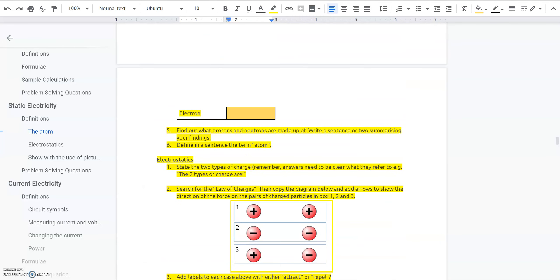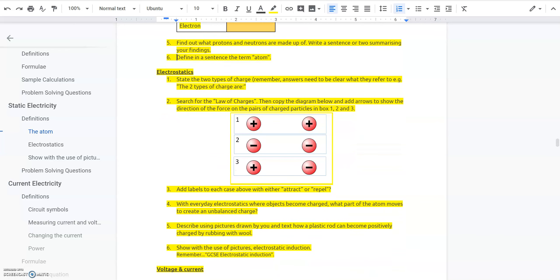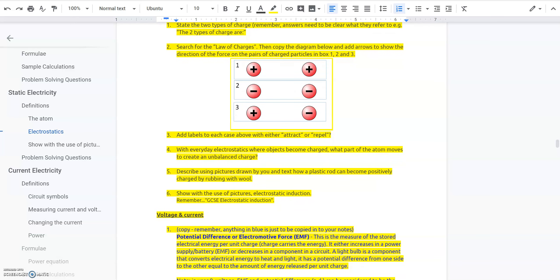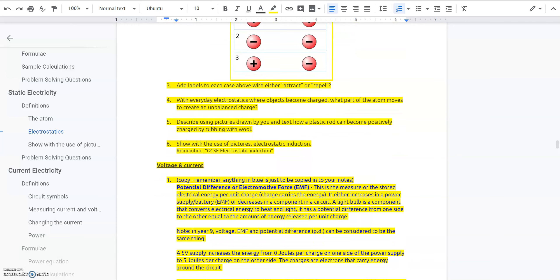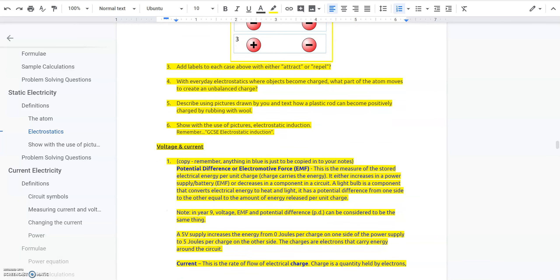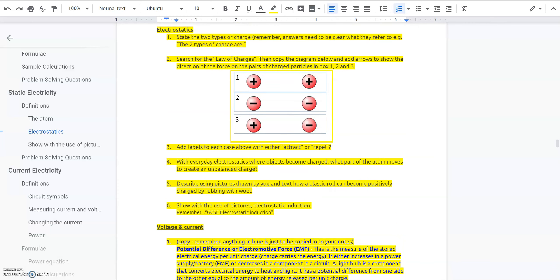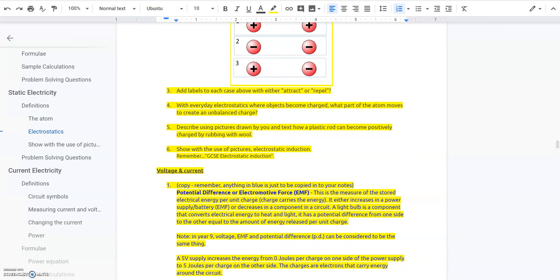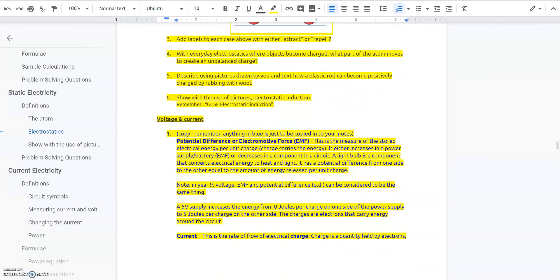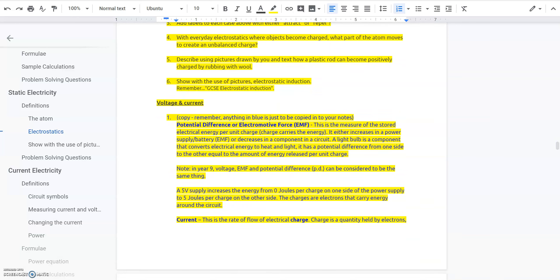So we've already answered all of these and finding a fact, write a sentence or two summarizing your findings. Part one of electrostatics asks you to name the two types of charges which we mentioned and there's a clue in question two to those. And you can look up the law of charges that just tells you what attracts and what repels and we have looked at that in class. It then asks you to add a label to those which I'll leave you to do. So remembering using your law that you've written, do the same charges attract or repel.